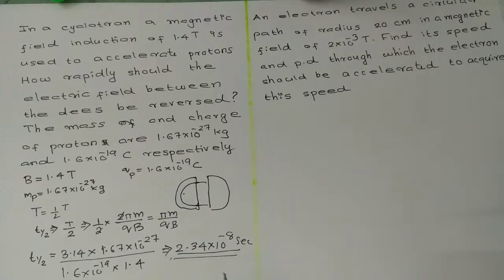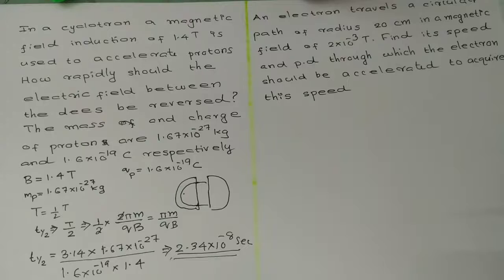For the working of the cyclotron, this should also be the time taken for one half cycle of the electric field between the dees. That is, the field should reverse after every 2.34×10⁻⁸ seconds.